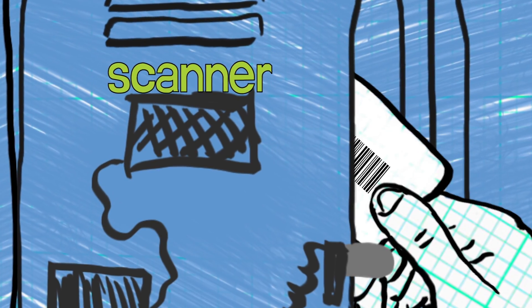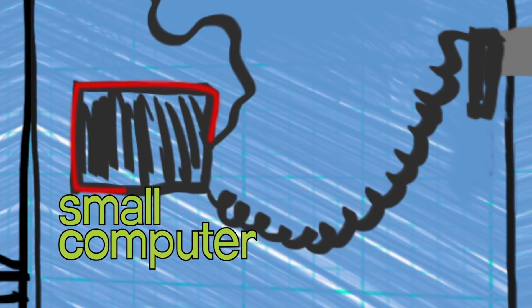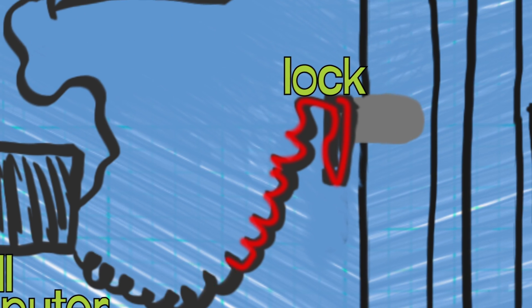Here's how it would work. A scanner would read the code, send a signal to the small computer inside of the locker, which would trigger a motorized lock to open.